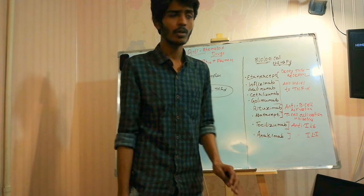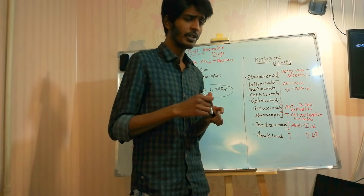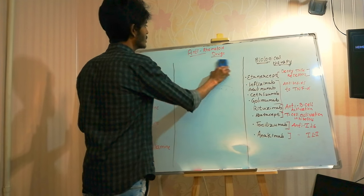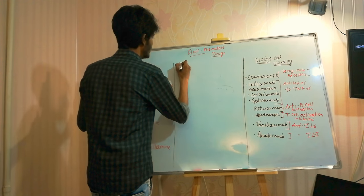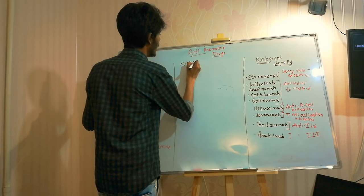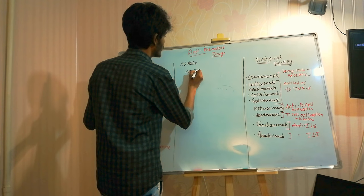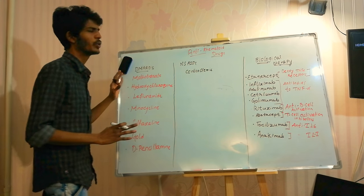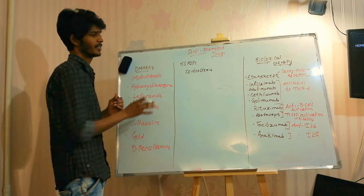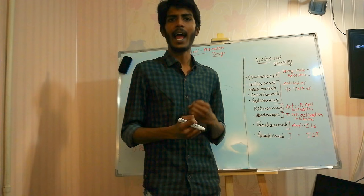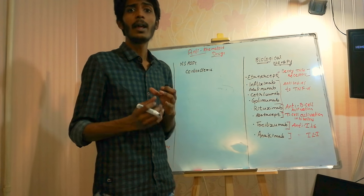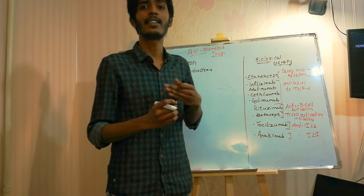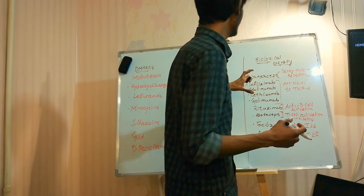When you have a patient with rheumatoid arthritis, you will start treating them with NSAIDs and corticosteroids. But there is also a special group of drugs used in rheumatoid arthritis: DMARDs, which stands for disease-modifying anti-rheumatoid drugs. These drugs decrease the progression of the disease — they won't cure it, but they decrease its course and the damage caused.